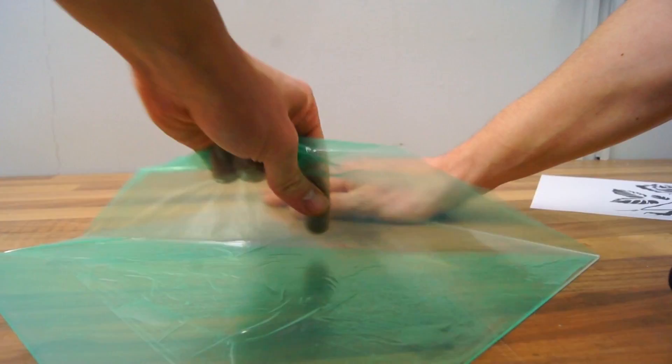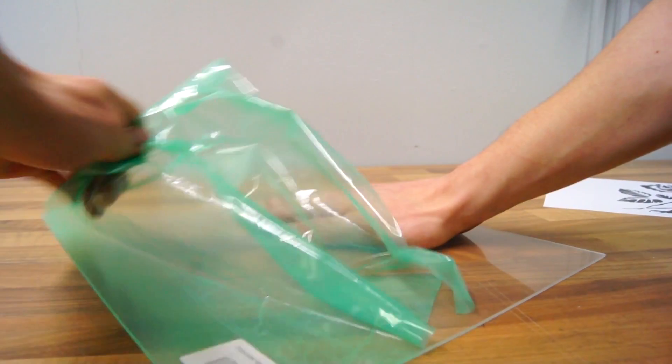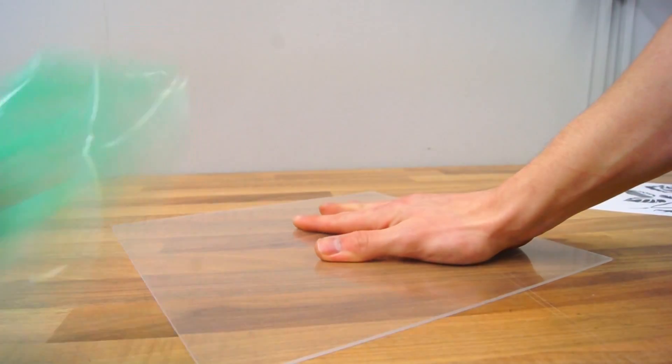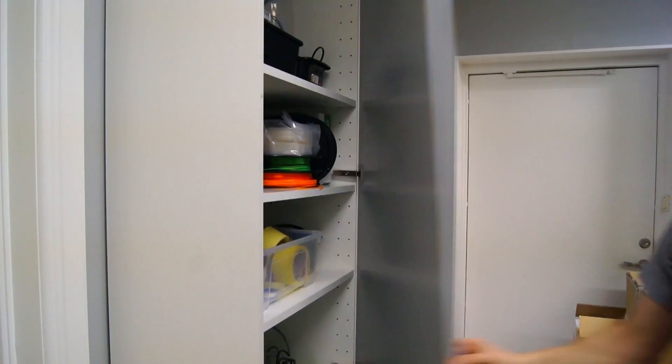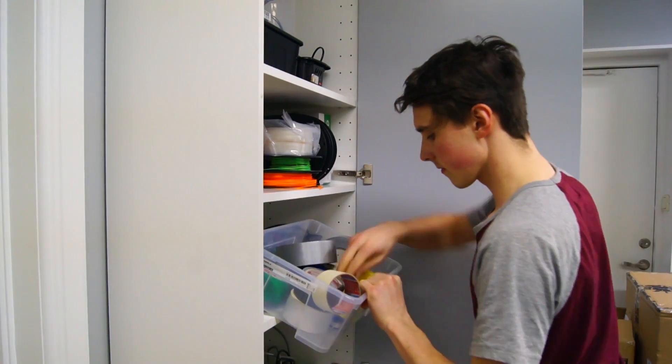Only remove the protective film on one side of the sheet. This way you won't scratch the surface while engraving. I then grabbed some clear tape and secured the stencil to the acrylic.